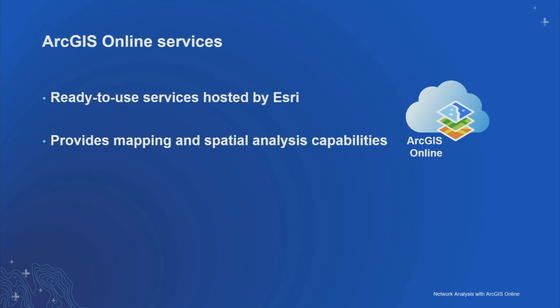ArcGIS Online Routing and Network Analysis Services are ready-to-use services hosted by Esri. You can use them without any data you host yourself, and without requiring any ArcGIS Server or ArcGIS Enterprise. You only need to come with your ArcGIS Online subscription and you can start using them. Esri manages these services in our own cloud — we update the data and software ourselves. All you have to do is come with your input data, your points and stops, and you can use these services.